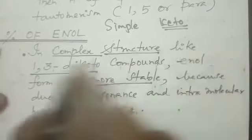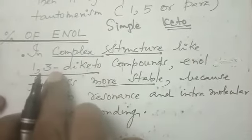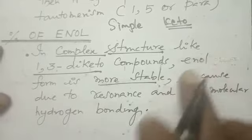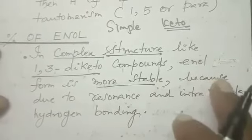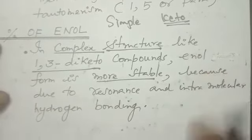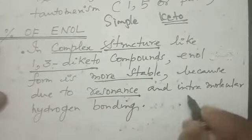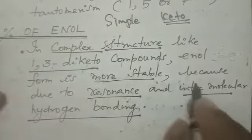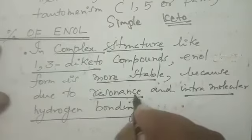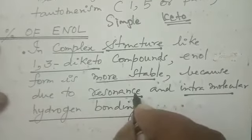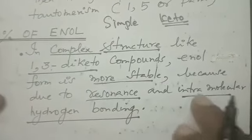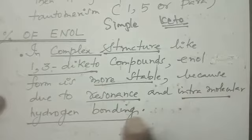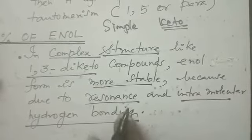What is complex? Two keto groups are arranged — called a complex structure. In complex structures, enol is more stable. The reasons are: due to resonance, and intramolecular hydrogen bonding. These two reasons make the enolic form more stable in complex structures.